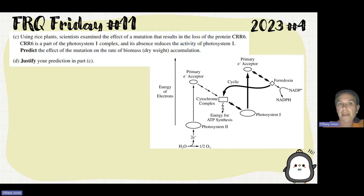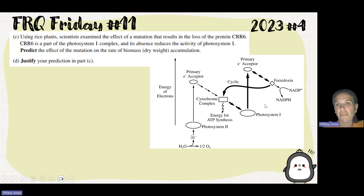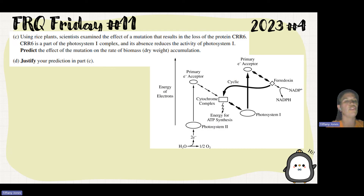Parts C and D go together — you predict in one and justify in the other. Using grass plants, scientists examine the effect of a mutation that results in the loss of protein CRR6. CRR6 is part of the photosystem 1 complex, and its absence reduces the activity of photosystem 1. The question asks you to predict the effect of the mutation on the rate of biomass dry mass accumulation, and then D asks you to justify that prediction.